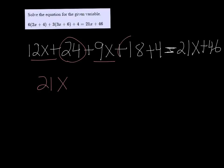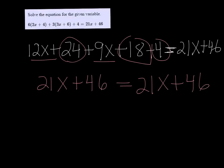24 and 18 and 4 are going to make 46. At this point I can stop because I see that the right and left of this equation are exactly the same.